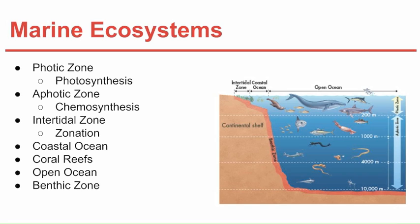The aphotic zone stretches from the 200-meter mark down to the bottom of the ocean. Here it is permanently dark, with frigid temperatures and very high pressure. This is where we find chemosynthetic autotrophs — because there is not enough sunlight for photosynthesis, they use chemical energy instead of light energy.